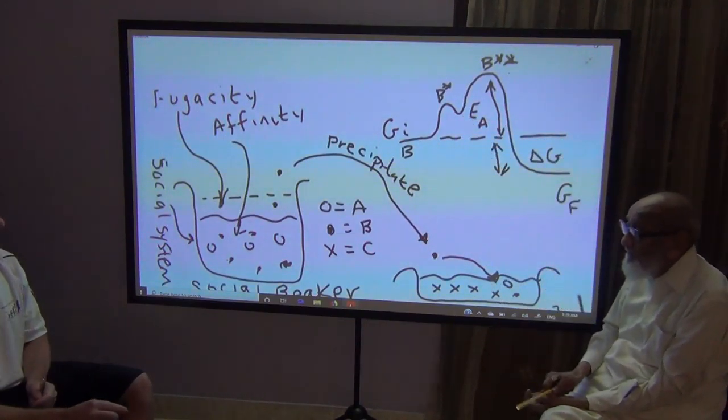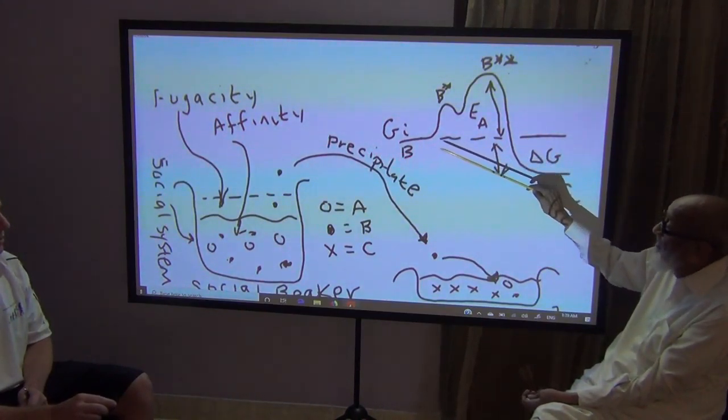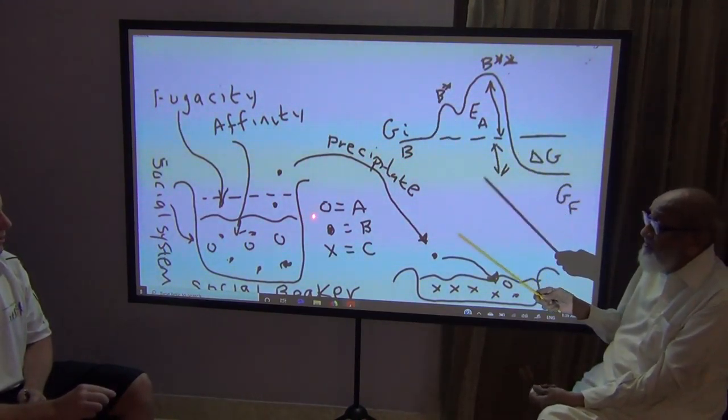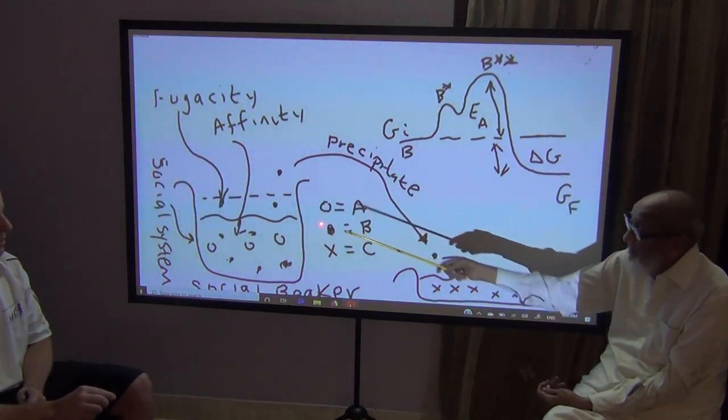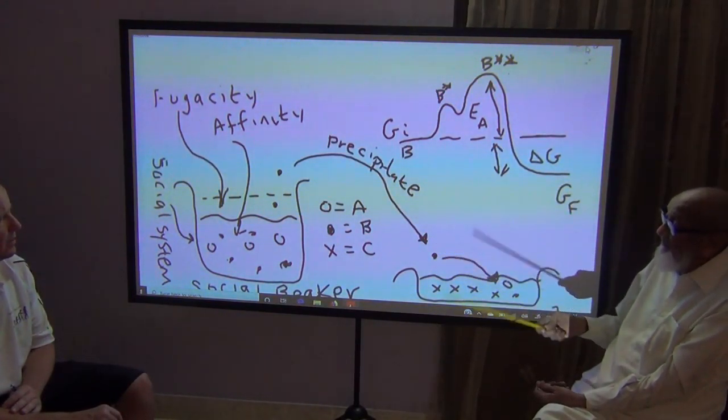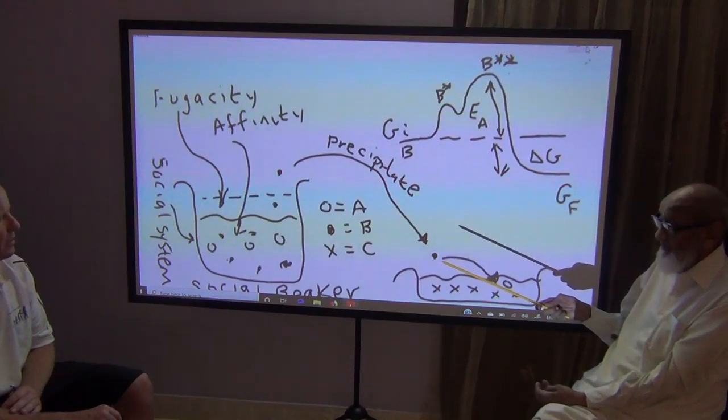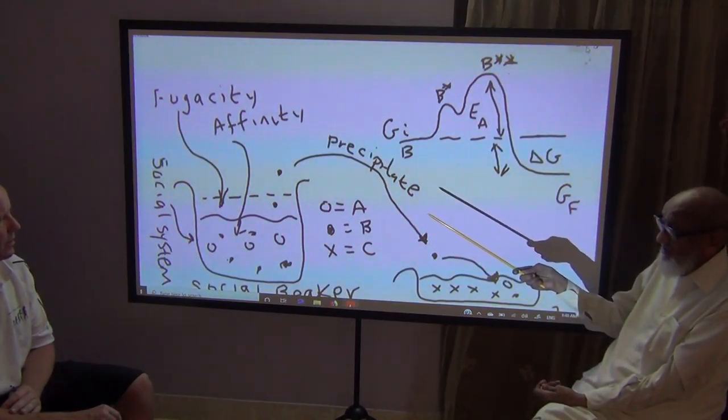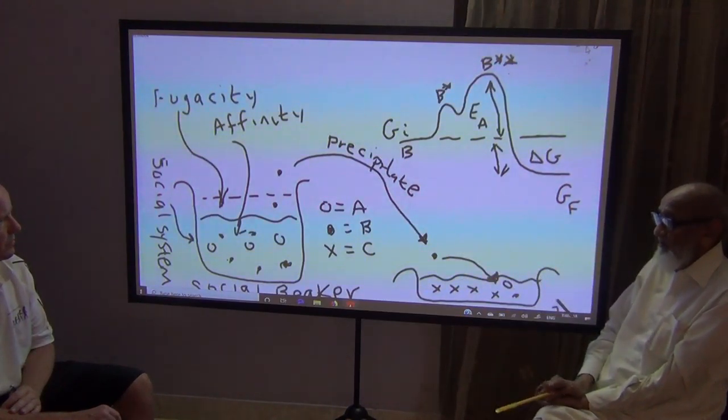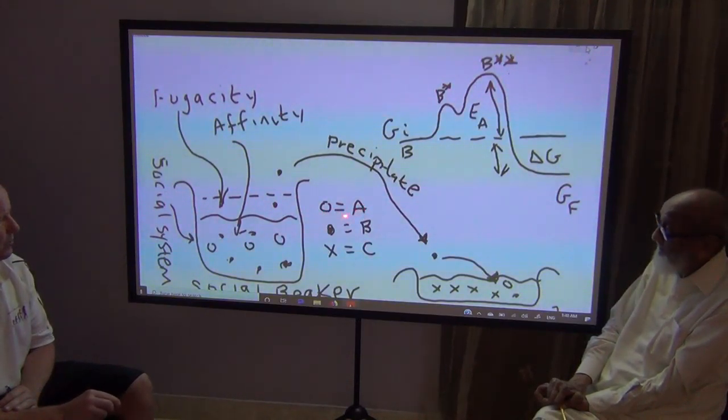So one question, what are the reactants, and what are the products? The reaction here will be between the government, that means the British people at the time, who were in the driving seat, and the people in India. Okay, but the question is, we've got three, so far we have three species, A, B, and C. Where do I put these letters on this diagram?